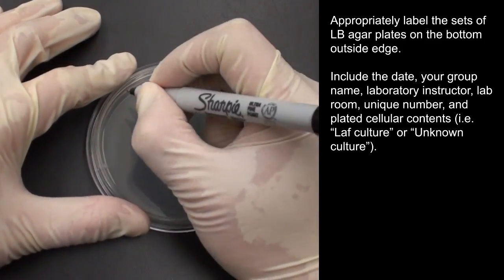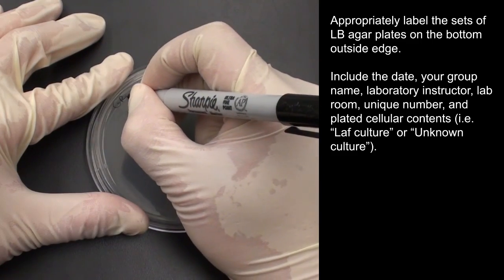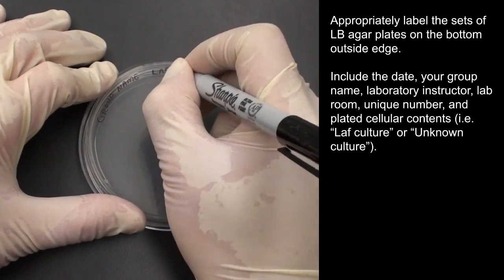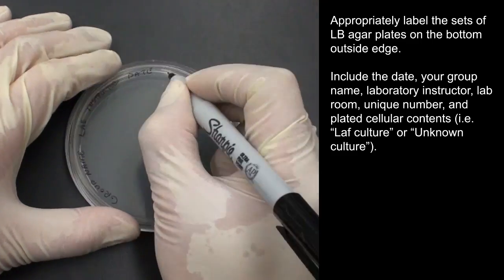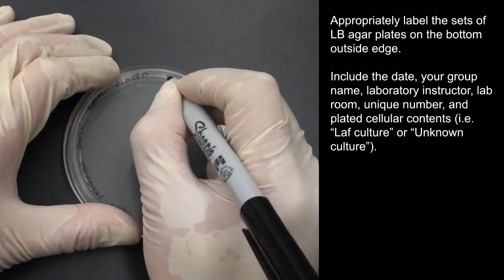Appropriately label the sets of LB agar plates on the bottom outside edge. Include the date, your group name, laboratory instructor, lab room, unique number, and plated cellular contents.